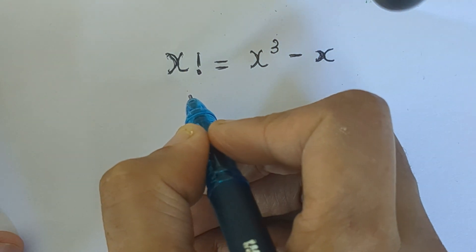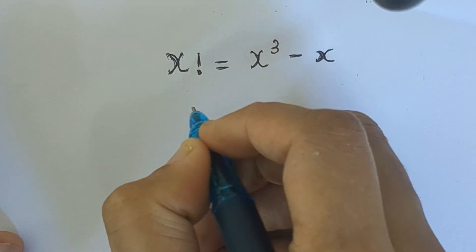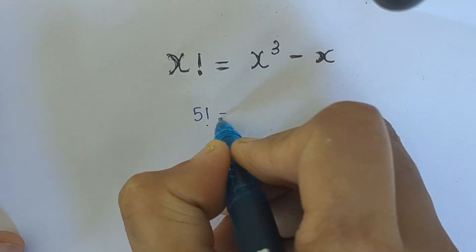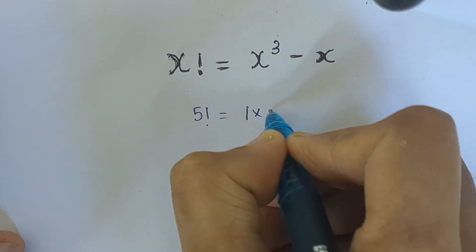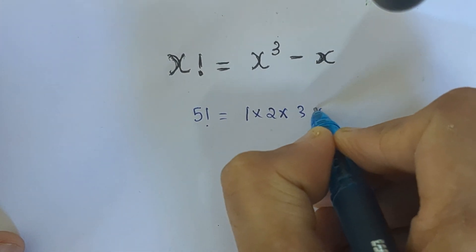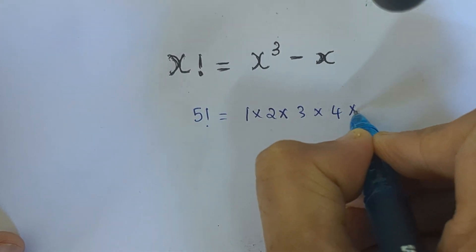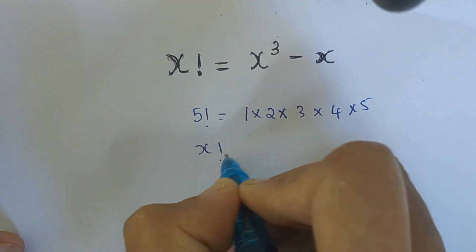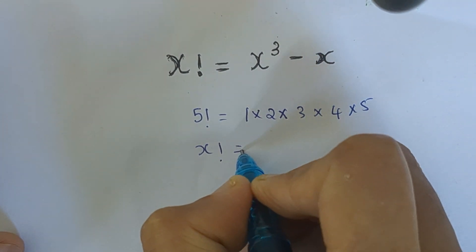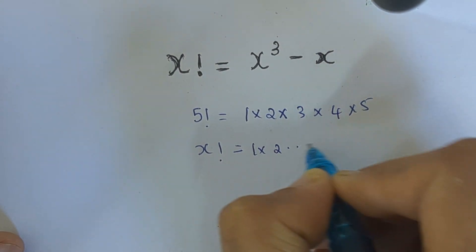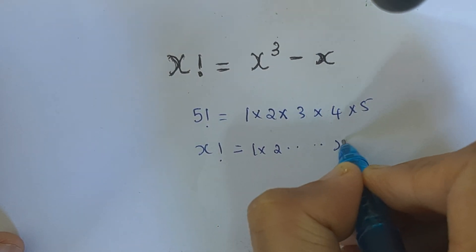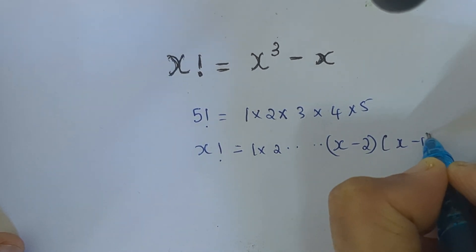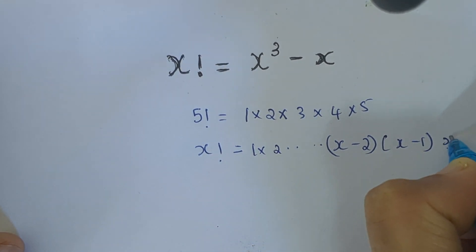So what is a factorial? For example, if it is 5 factorial, that is 1 × 2 × 3 × 4 × 5. Now what is x factorial? x factorial equals 1 × 2 × ... × (x-2) × (x-1) × x.